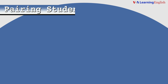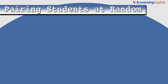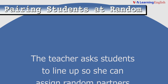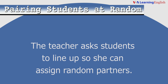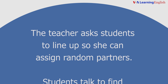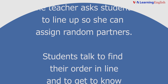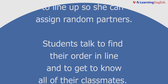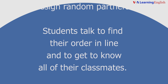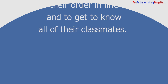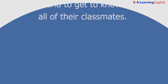Pairing students at random. The teacher asks students to line up so she can assign random partners. Students talk to find their order in line and get to know all of their classmates.